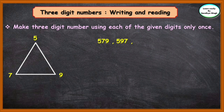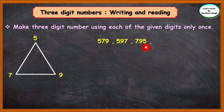Now, let us take 7 in hundreds place. The number will be 7, 9, 5 — that is 795. Now, let us interchange the tens place and the ones place of this number, giving us 759.